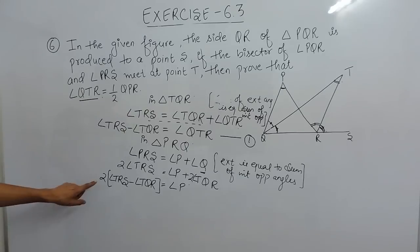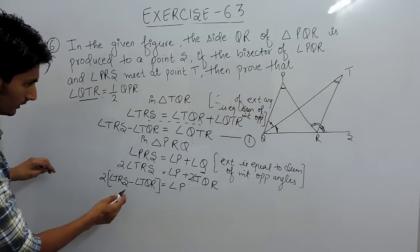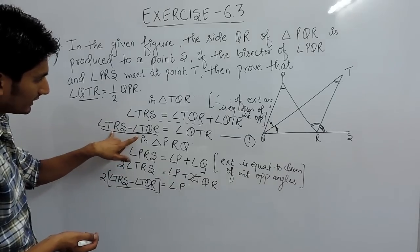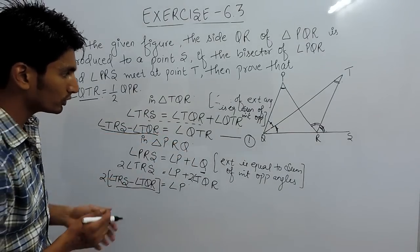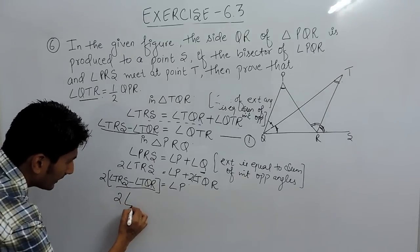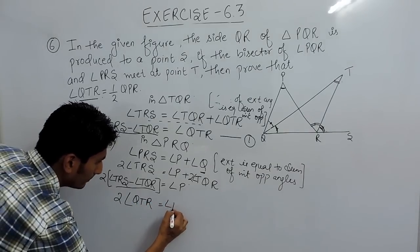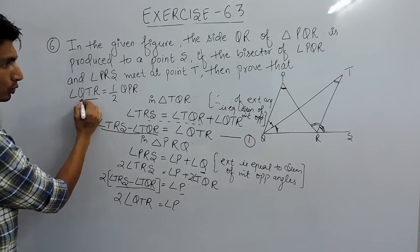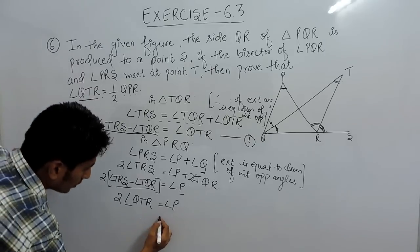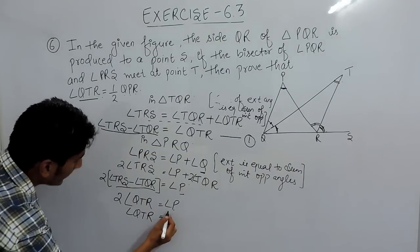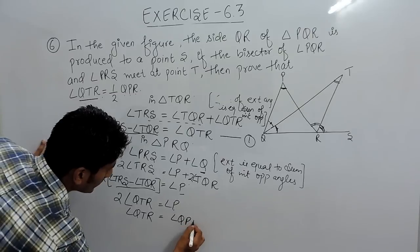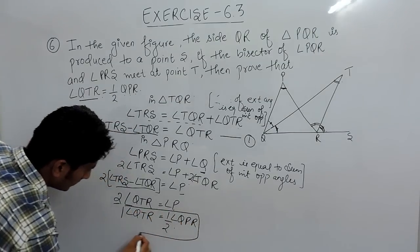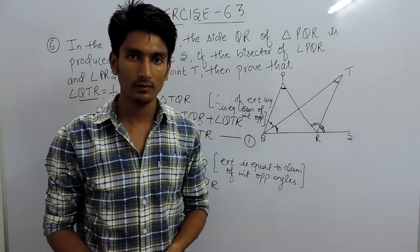Therefore, angle P equals twice of angle TRS minus twice of angle TQR, which equals twice of the quantity (angle TRS minus angle TQR). From our first equation, angle TRS minus angle TQR equals angle QTR. So angle P equals twice of angle QTR. Since angle P is angle QPR, we get angle QPR equals 2 times angle QTR, or angle QTR equals half of angle QPR. This is the required proof.